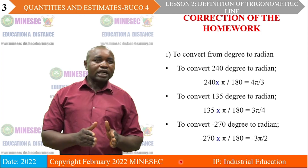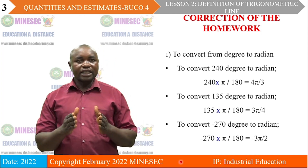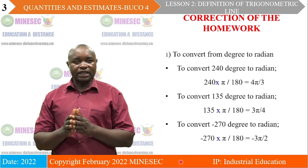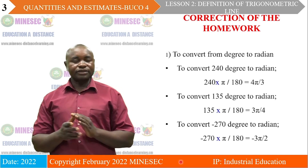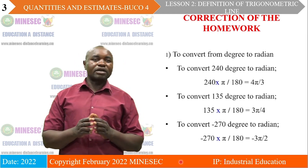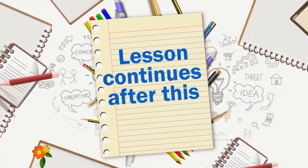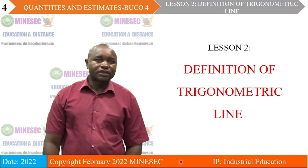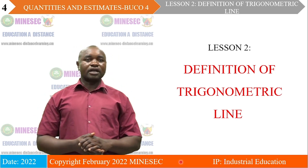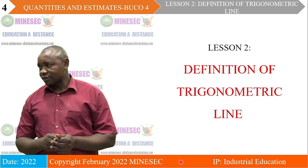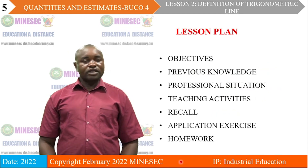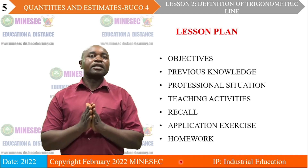Therefore, from the beginning: 240 degrees is equal to 4 pi on 3, 135 degrees is equal to 3 pi on 4, and minus 270 degrees is equal to minus 3 pi on 2. So we are going to continue with the definition of trigonometric lines.